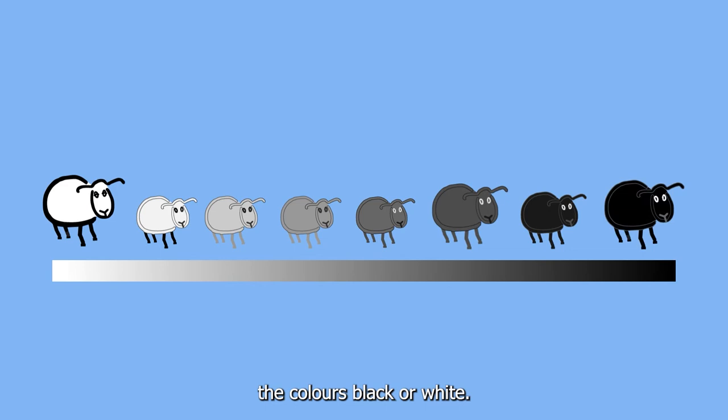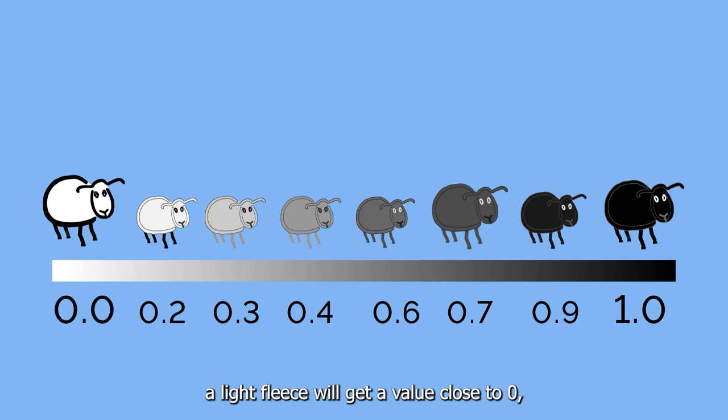Therefore, a dark fleece will get a value close to 1, a light fleece will get a value close to 0, and different shades of grey will get values that fall in between.